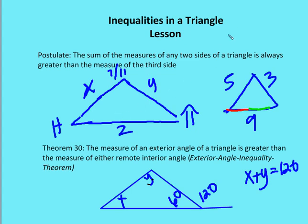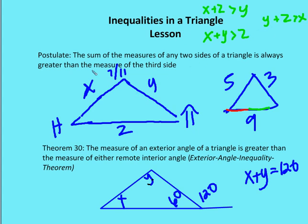So we can write an inequality for the relationship. We can say x plus y is going to be greater than z. We can say x plus z is going to be greater than y. And we can say y plus z is going to be greater than x. So those are the three inequalities we can get from this postulate.